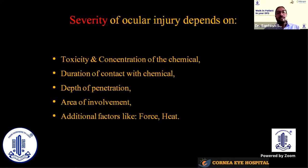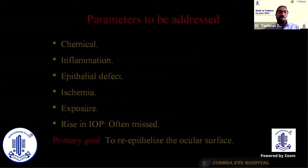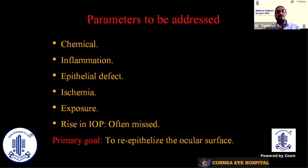The severity of injury depends on the toxicity and concentration of the chemical, the duration of contact with the eye, the depth of penetration, the area of involvement — whether one eye or both — and additional factors such as the force with which the chemical was spilled and the temperature of the chemical. During treatment, the parameters we must address include the chemical itself, the inflammation caused, the epithelial defect, and ischemia — especially scleral ischemia.